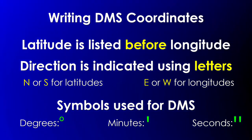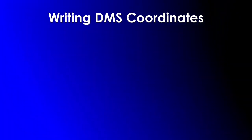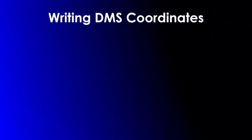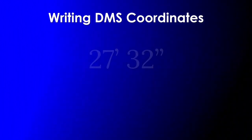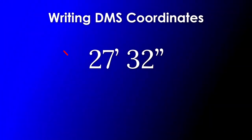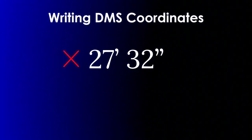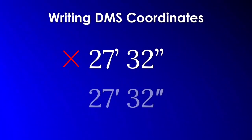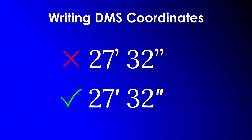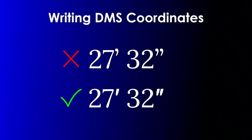I want to point something out about this — it is an issue created by word processing software. For example, in Microsoft Word, the default is for the software to convert single quotes and double quotes to what we call smart quotes, which are the curled version of the single stroke and the double stroke. These are not minutes and seconds. The symbols for minutes and seconds are the straight line single and double quote. You may have to turn off smart quotes if you're typing these things in Microsoft Word.